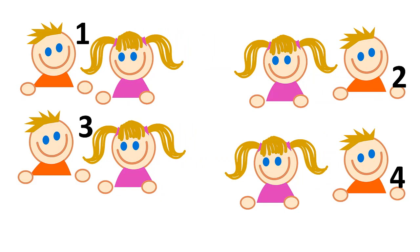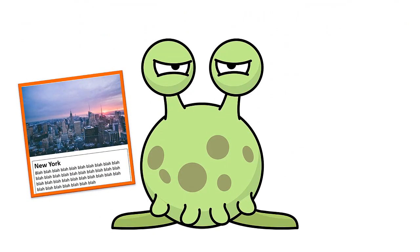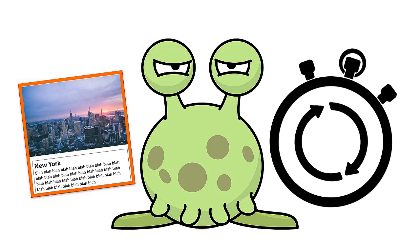At this point it should seem fairly straightforward — they just tell each other about the texts — but there are some problems that can raise their ugly heads. One is that learners just show each other their text or their answers. Remember, you want them to speak, so be clear: you can't show your texts or answers to each other — you have to talk.